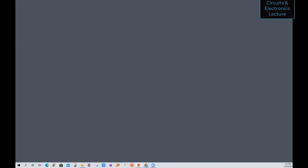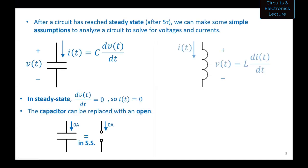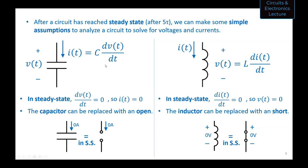Now let's start the class material. I want to jump back into time constants and steady state and show you a second way to solve first-order circuits. Where we left off: after roughly five time constants a circuit reaches steady state, voltages and currents converge to DC. You replace capacitors with opens (no current through a capacitor in steady state) and inductors with shorts (no voltage across an inductor in steady state), then analyze the circuit.